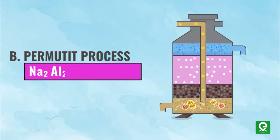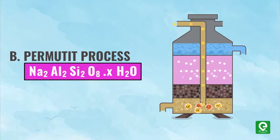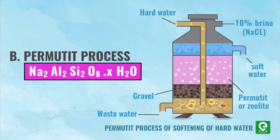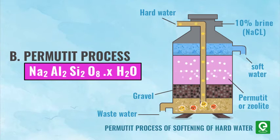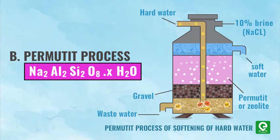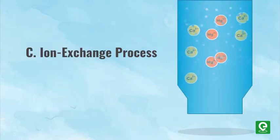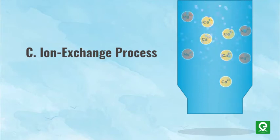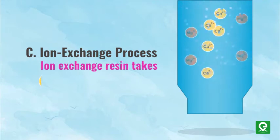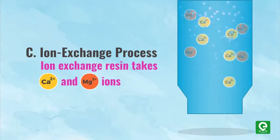In the Permutit process, the sodium ions present in Permutit get exchanged with calcium and magnesium ions of hard water. In the ion exchange process, an ion exchange resin removes the Ca²⁺ and Mg²⁺ ions from hard water.